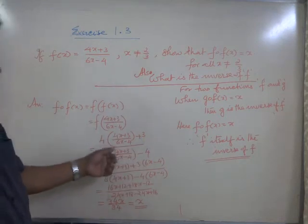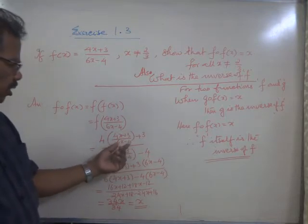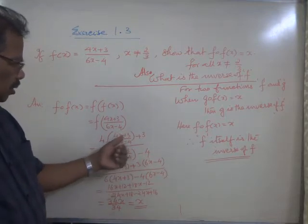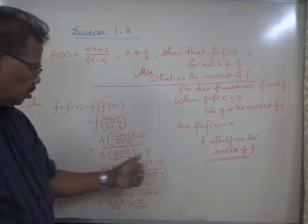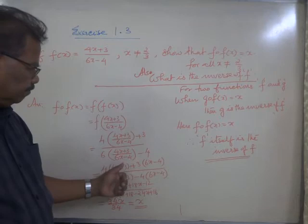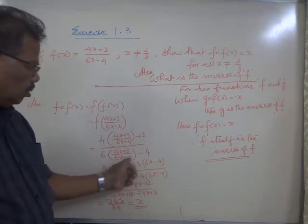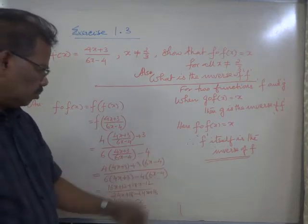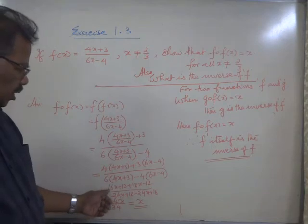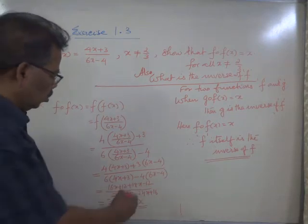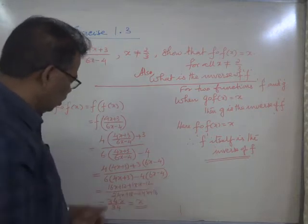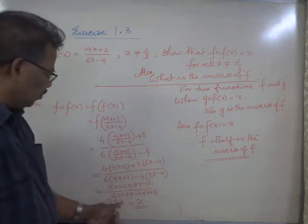Multiplying the numerator and denominator by (6x - 4), you will get 4 into (4x + 3) plus 3 into (6x - 4) in the numerator. That is 16x + 12 + 18x - 12, and the 12s cancel. 16 plus 18 is 34x.